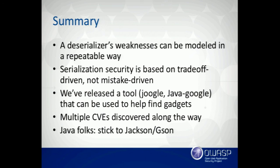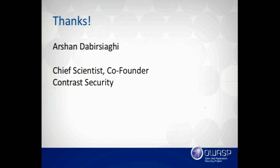A deserializer's weaknesses can really be modeled and analyzed in a repeatable way. Some parts — gadget chaining — are still art, but the rest you can do just by reading the code, and I've given you the tips to find the places to look. Some decisions that deserialization libraries think are design decisions actually have huge impacts on security. We released a tool to help you find gadgets, and for Java folks: stick to Jackson and Gson — those are the safe options.